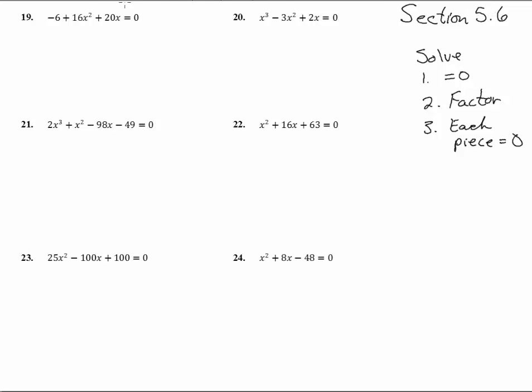Here we are in section 5.6 with numbers 19 through 24, and we are expected to solve these which will involve setting them equal to 0. We'll notice that all of these are in that condition. We'll factor each one and then each piece, each factor will be set equal to 0 and that's how we'll get our answers.